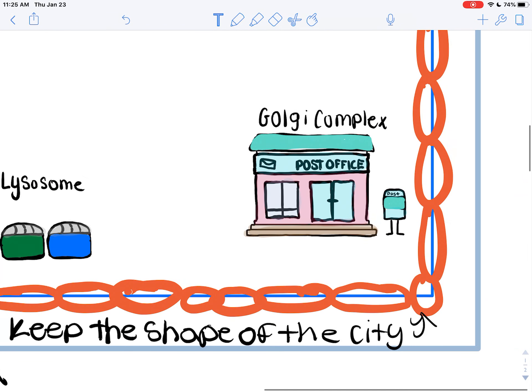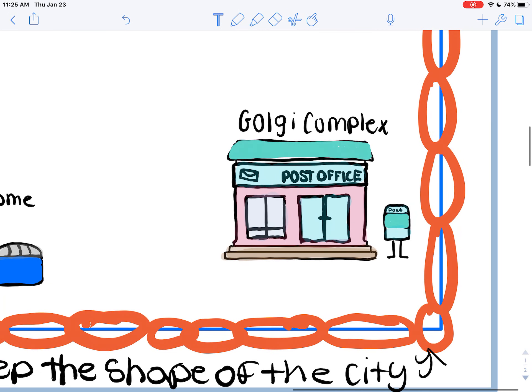Then we have the Golgi complex, and I did a post office to represent that because it sends off nutrients.